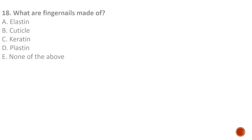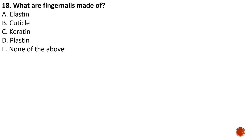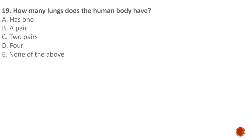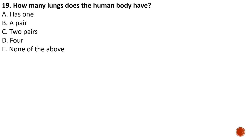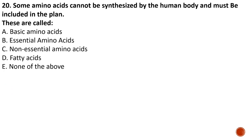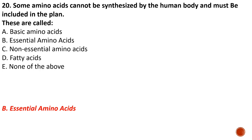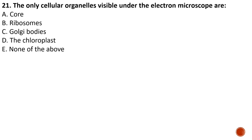Question number eighteen: fingernails are made up of a protein called keratin. Question number nineteen: the human body has two lungs, giving us answer B. Question number twenty: some amino acids cannot be synthesized by the human body and must be included in the diet — these are called essential amino acids, which cannot be synthesized by the body and must be taken in through food.